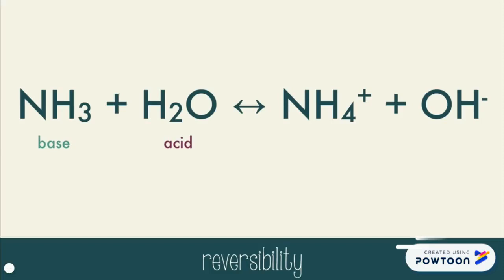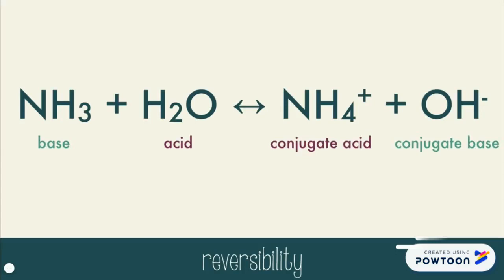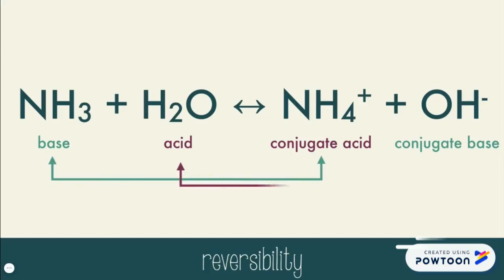In turn, on the other side, your ammonium ion can donate its hydrogen ion back to the hydroxide in the reverse reaction — we call that the conjugate acid. The hydroxide ion taking on that hydrogen is called the conjugate base. So ammonia as the base turns into the conjugate acid ammonium, and water as the acid turns into the conjugate base hydroxide ion. You have a conjugate acid-base pair on each side.